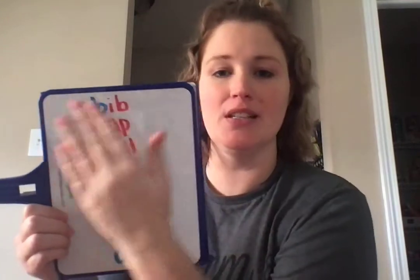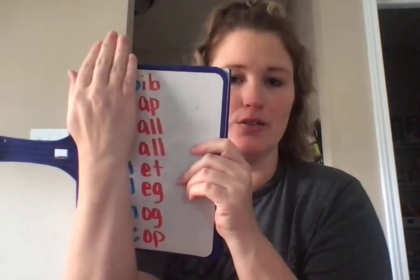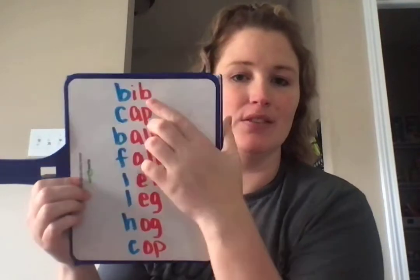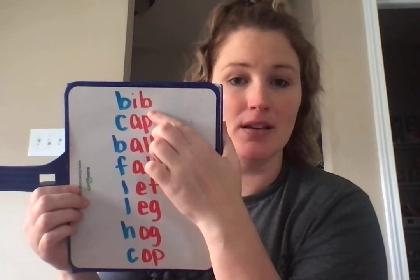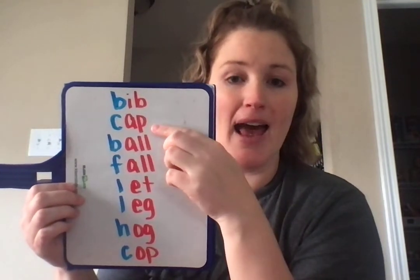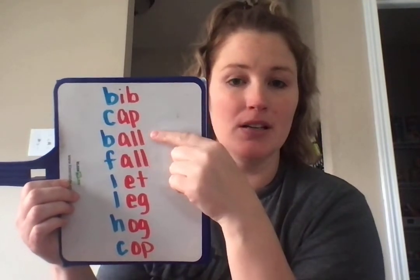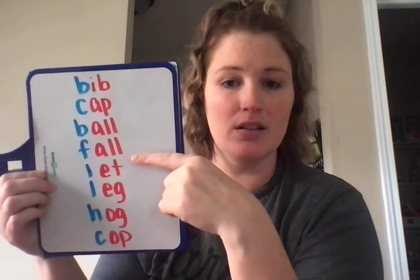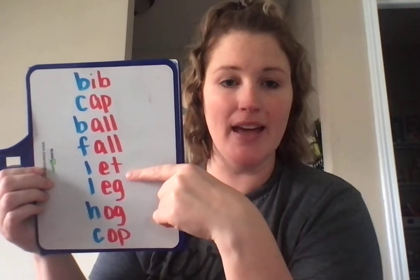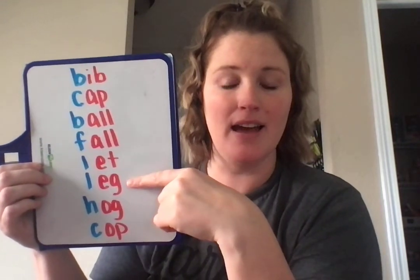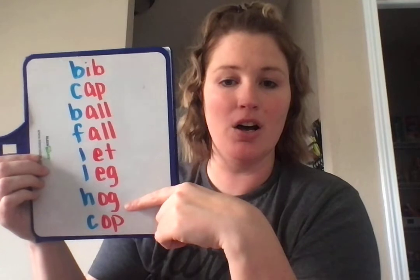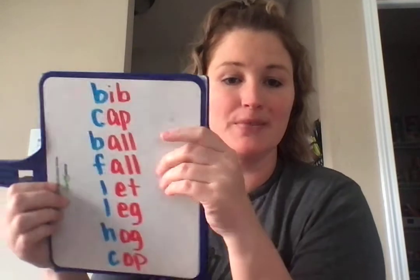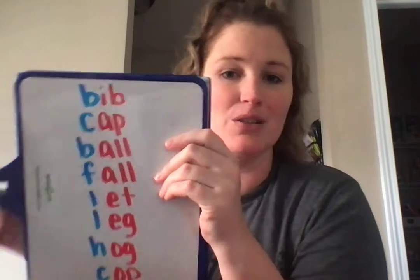We're going to read the sounds that are in the red. So we have ib, ap, al, al, et, egg, og, and op. Now let's try to read them as whole words.